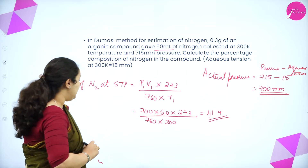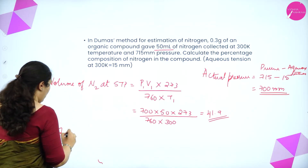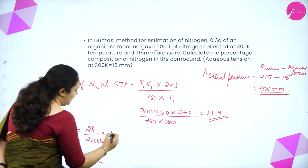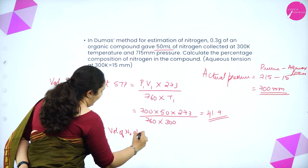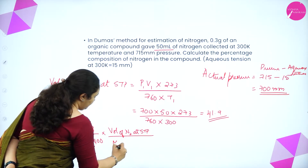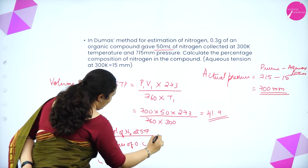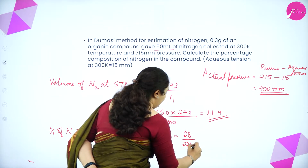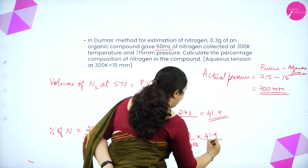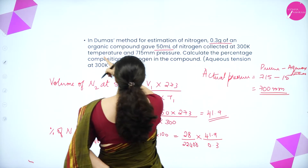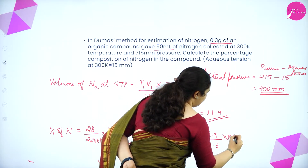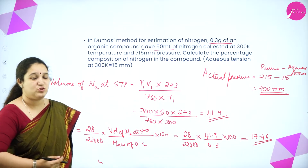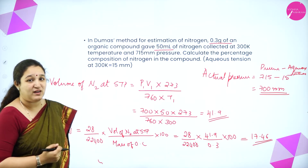Now find the percentage of nitrogen: % N = (28 / 22,400) × (volume of N₂ at STP / mass of organic compound) × 100. Substituting: 28 / 22,400 × 41.9 / 0.3 × 100 = 17.46. So the percentage of nitrogen is 17.46%. I hope you have understood how to solve this numerical.